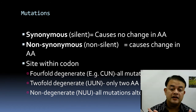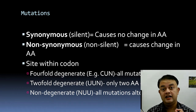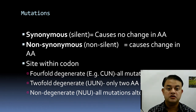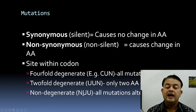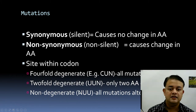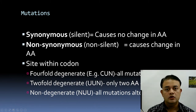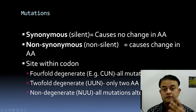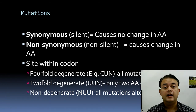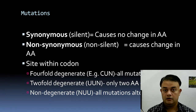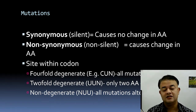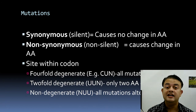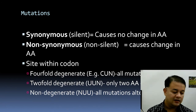Non-degenerate sites are positions where any substitution results in an amino acid change. The second codon position is usually non-degenerate, and in certain triplet codons (e.g., NUU), the first position is also non-degenerate — any one of four substitutions at that N position calls for a different amino acid.